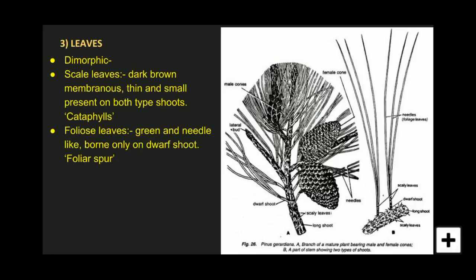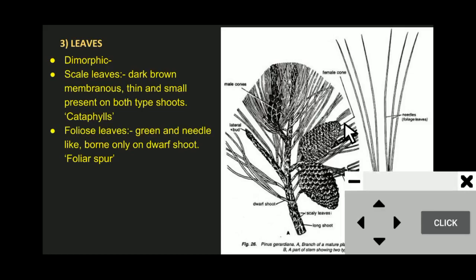Foliage leaves are needle-like because they are adapted for xerophytic conditions. The term foliosper refers to the group of needle-like foliage leaves which are present on the dwarf shoot. So a group of needle-like foliage leaves on a dwarf shoot is called a foliosper, while cataphylls are scaly leaves present on the dwarf shoot with distinct midrib.